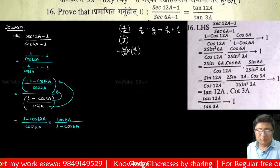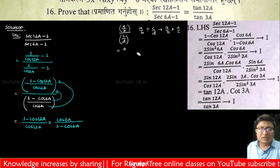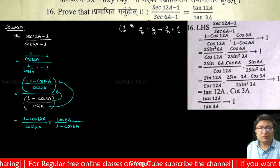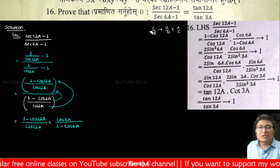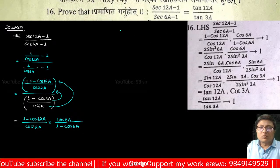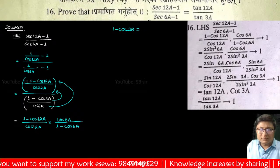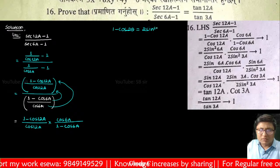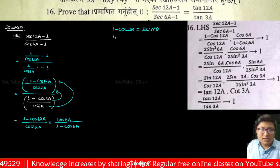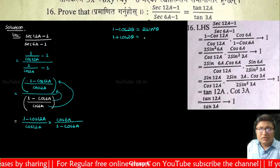This is a very important step — almost the core of your question. Remember the formulas: 1 minus cos 2θ equals 2 sin squared θ, and 1 plus cos 2θ equals 2 cos squared θ. Write this formula at the top of your copy and remember it.